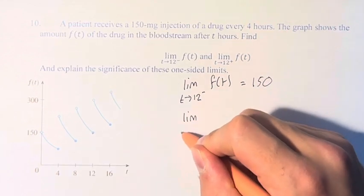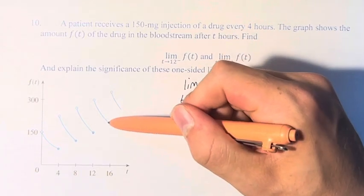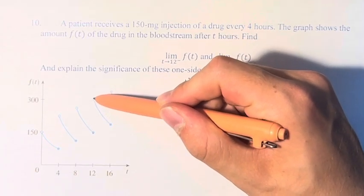The limit as t approaches 12 from the right of this function is way up here at 300.